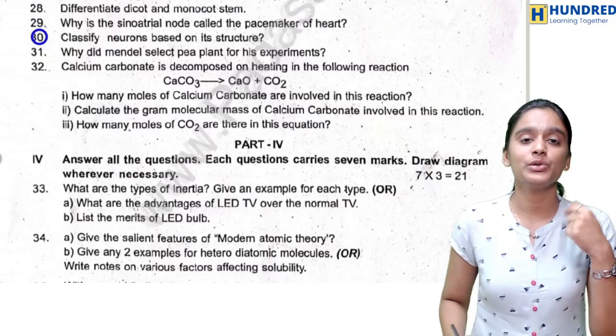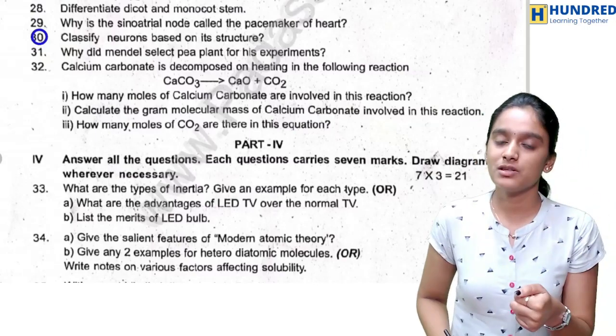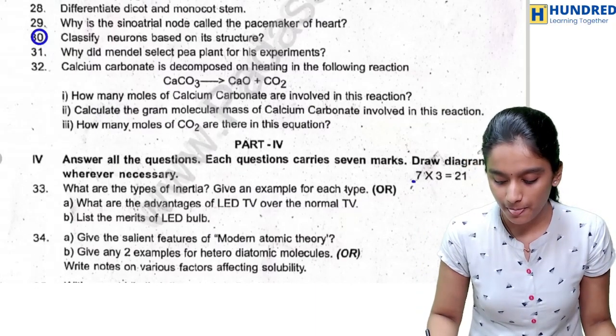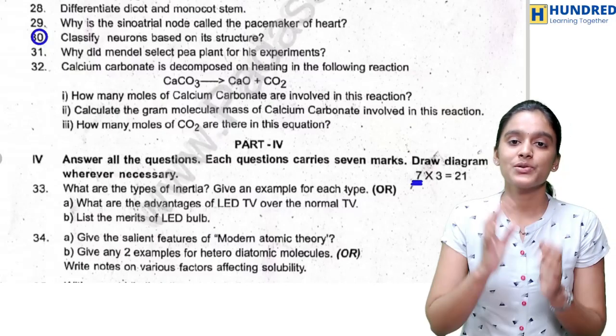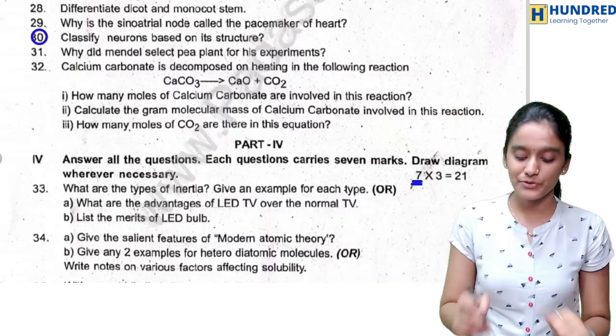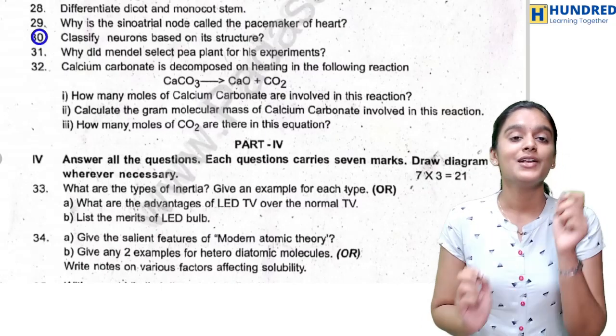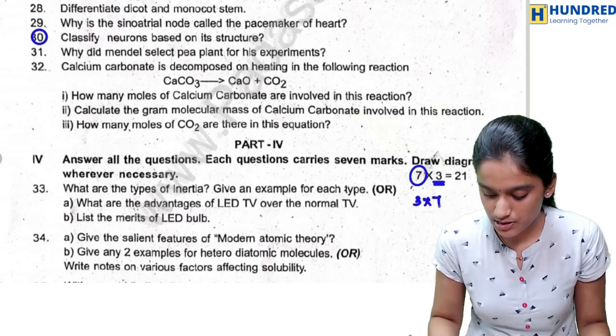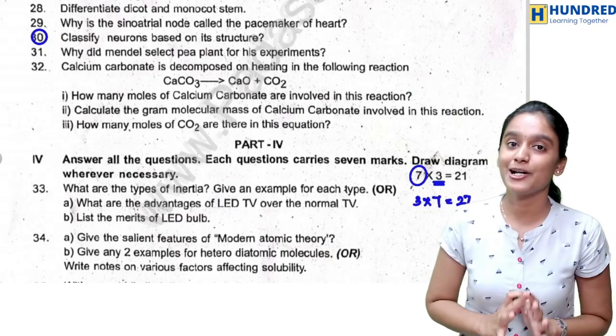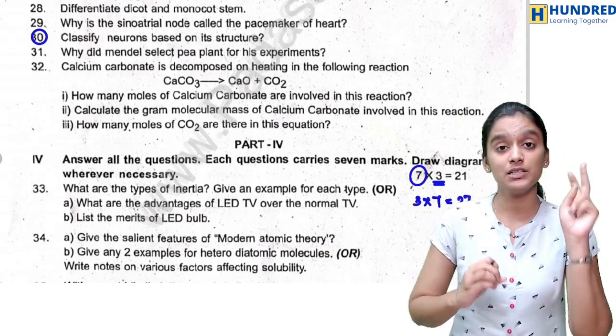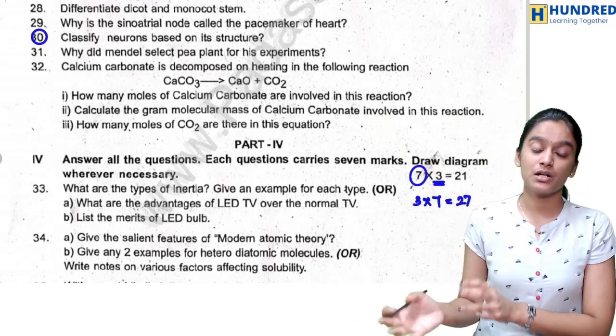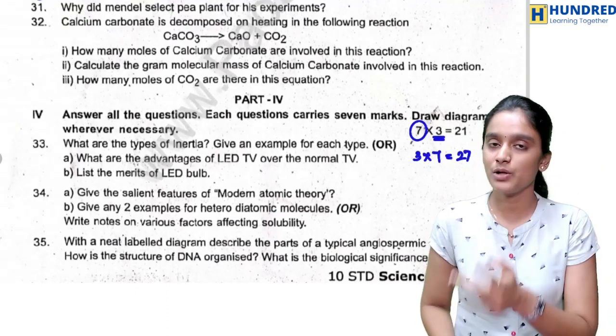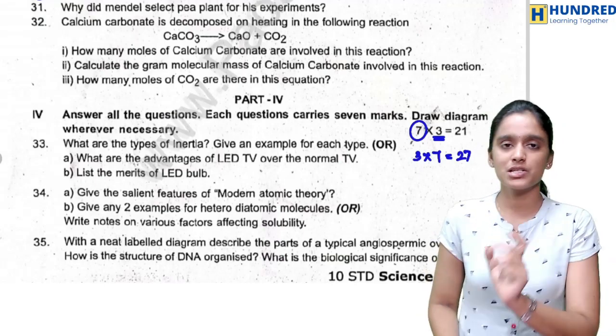Next Part 4, you will not have any open choice question, either or option. Either you have to attend the A option or B option and you have to attend seven questions. Seven into three, this is confusing. Sometimes question paper, this is your seven mark question. You have to attend three questions. This should be written as three into seven equals 21. So you don't get confused here. We have a question paper pattern: 1 mark, 2 mark, 4 mark, and 7 mark. Here you have to attend three questions, that is one from physics and the other question is from chemistry and the other last question is going to come from your biology.